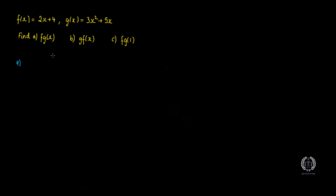So we're going to look at f(g(x)) and how we're going to find it. Let me write the functions again so you can see: f(x) = 2x + 4 and g(x) = 3x² + 5x. Now when you want to find f(g(x)), you need to first look at the second letter — not the first but the second — so in this case it's g, and we're looking at the g function.